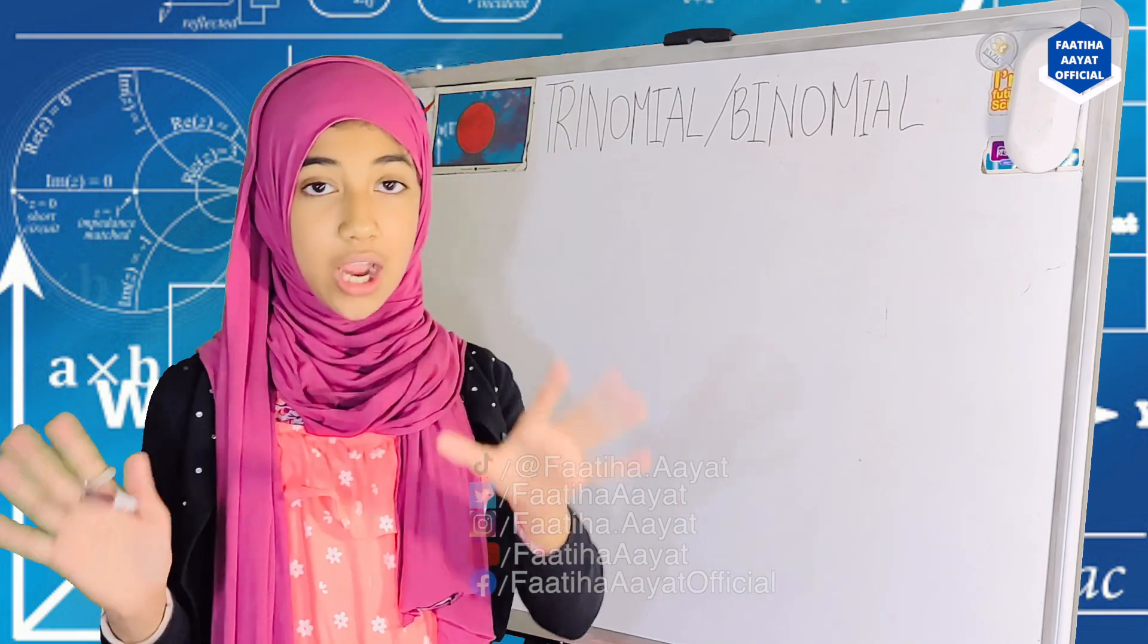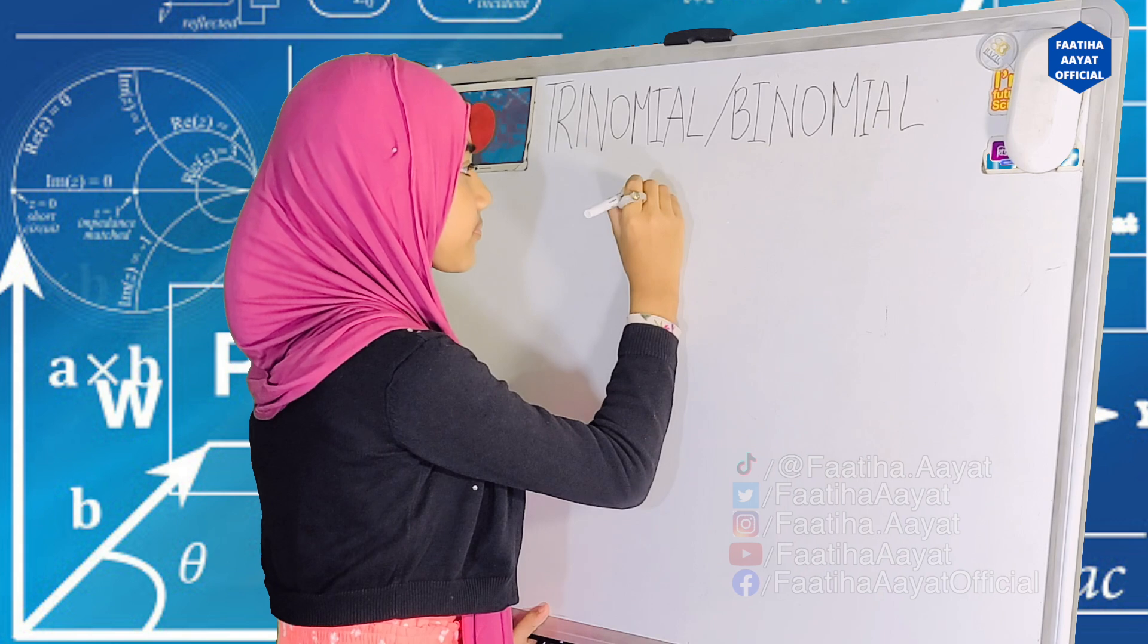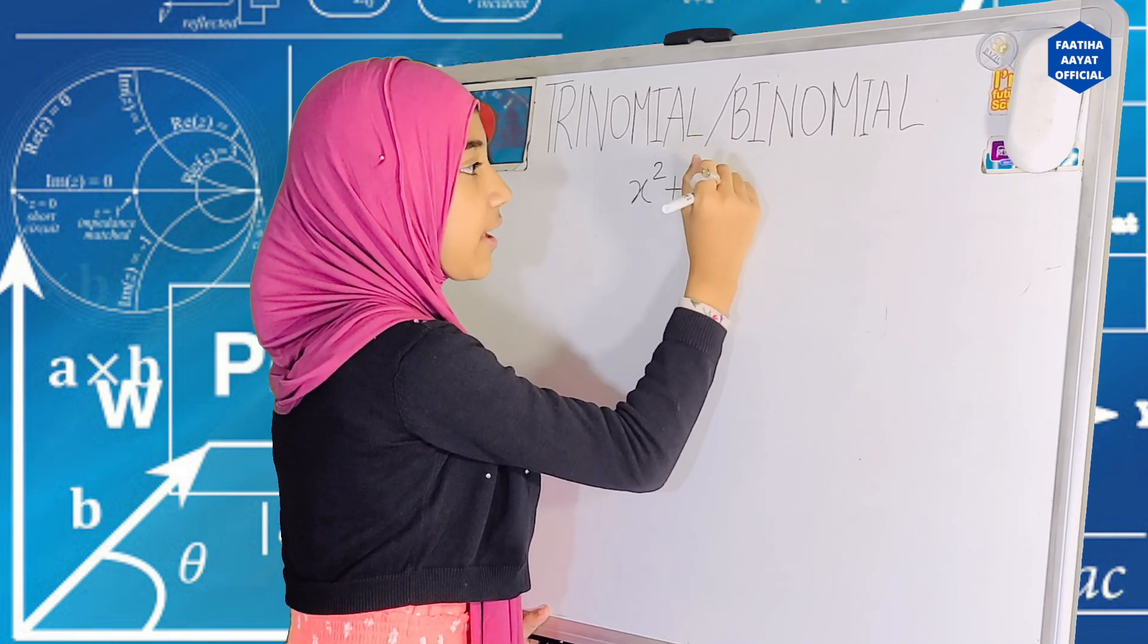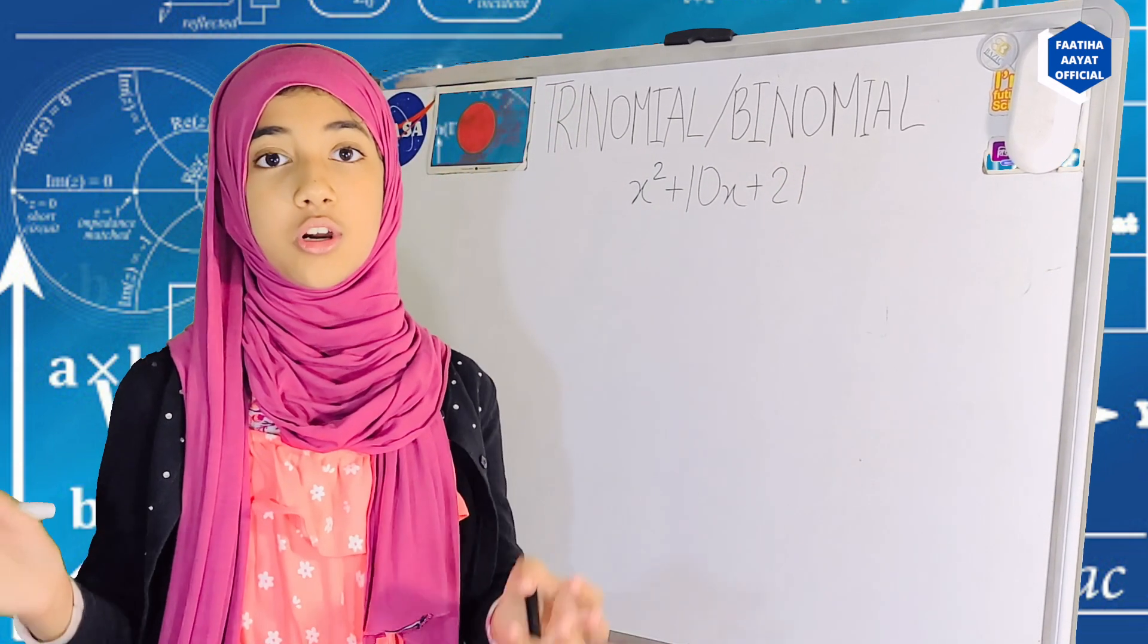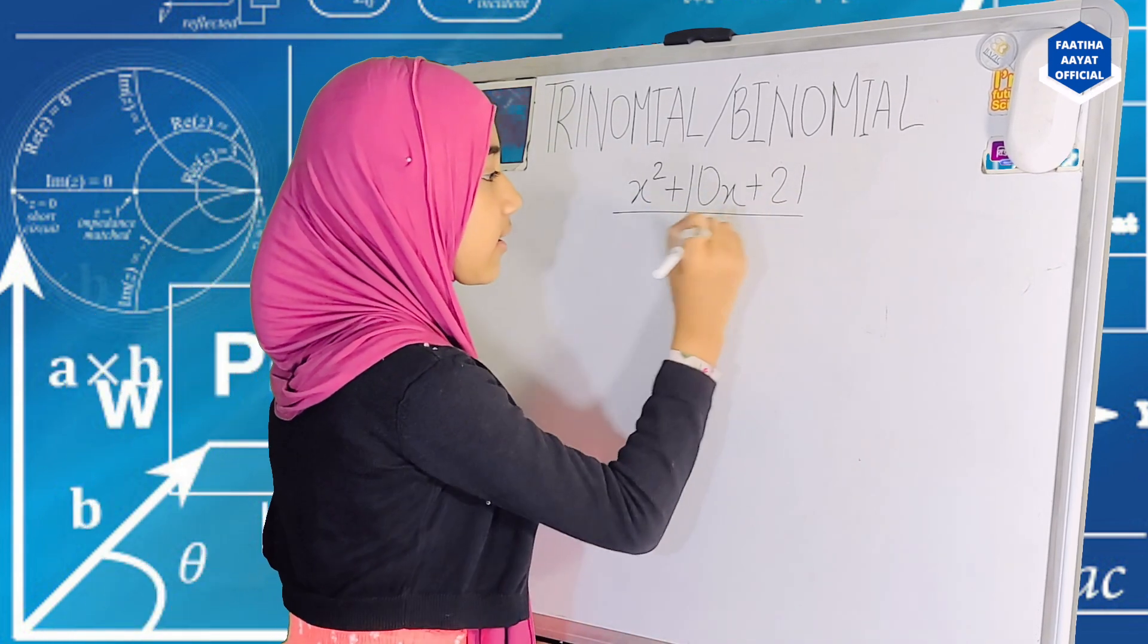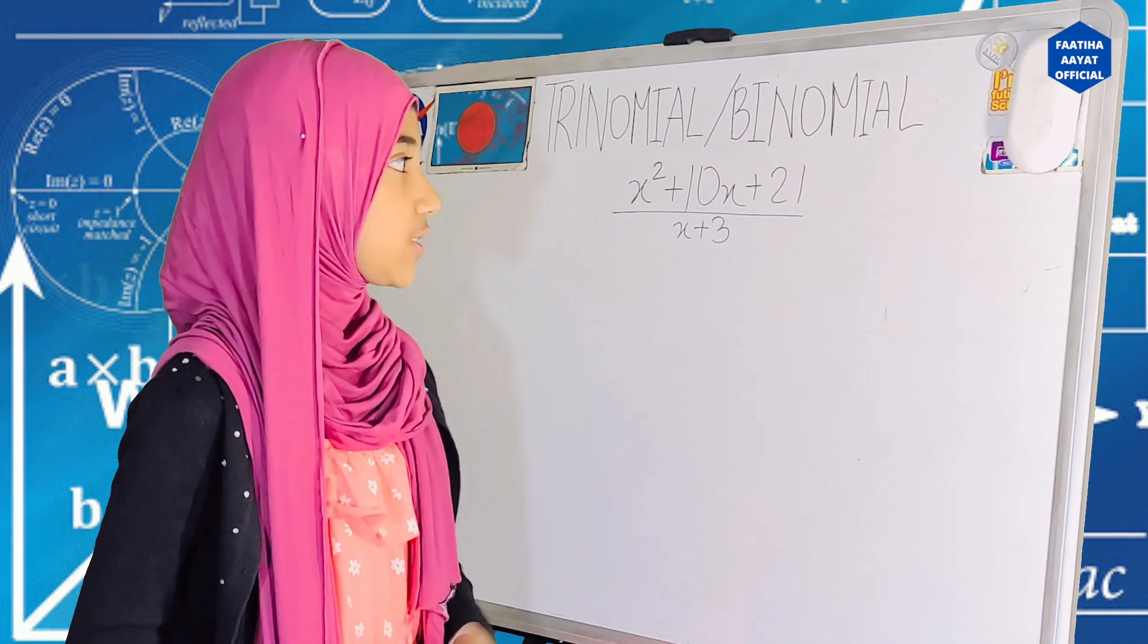So, let's take our trinomial as, for example, let's say, x squared plus 10x plus 21. And our binomial as, let's say, x plus 3. So, now we're going to figure out how to do this.